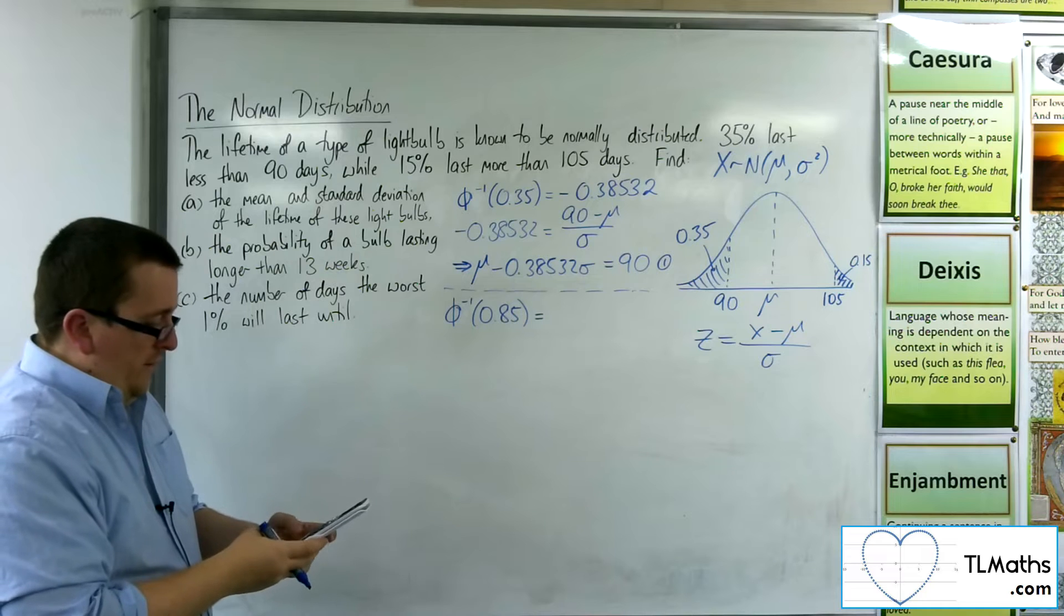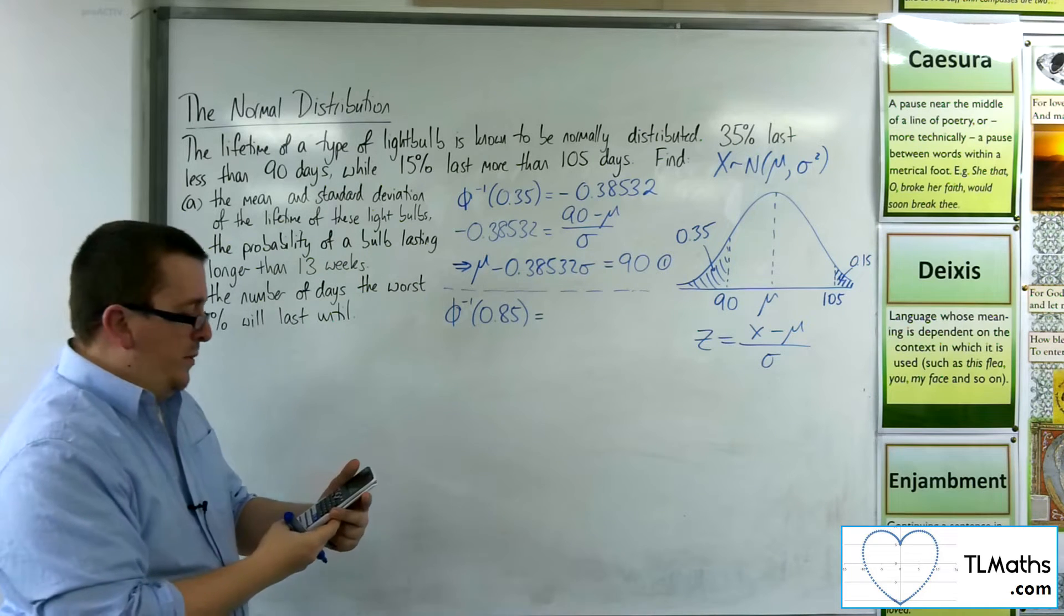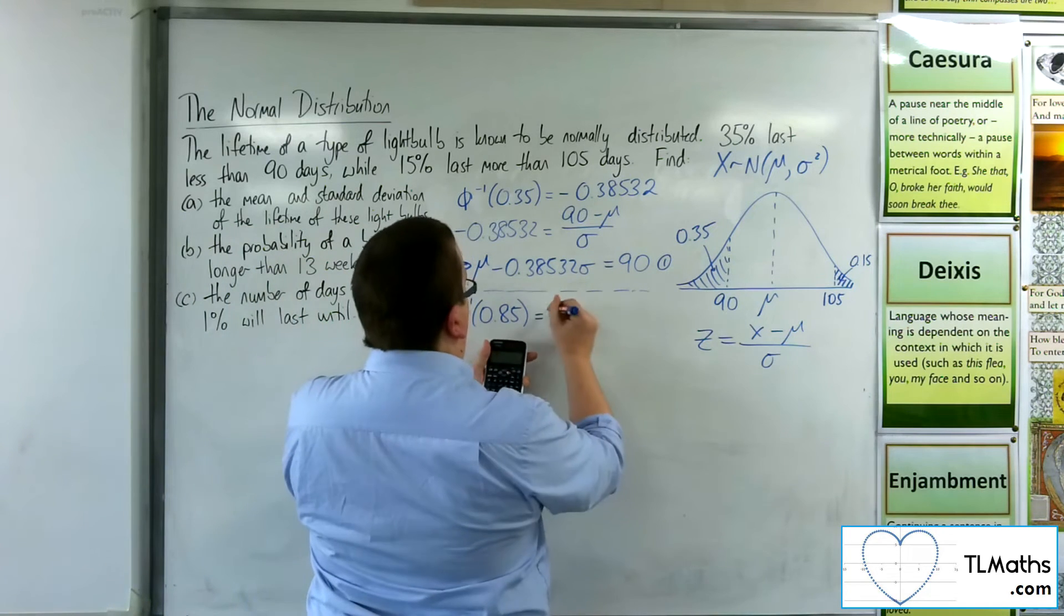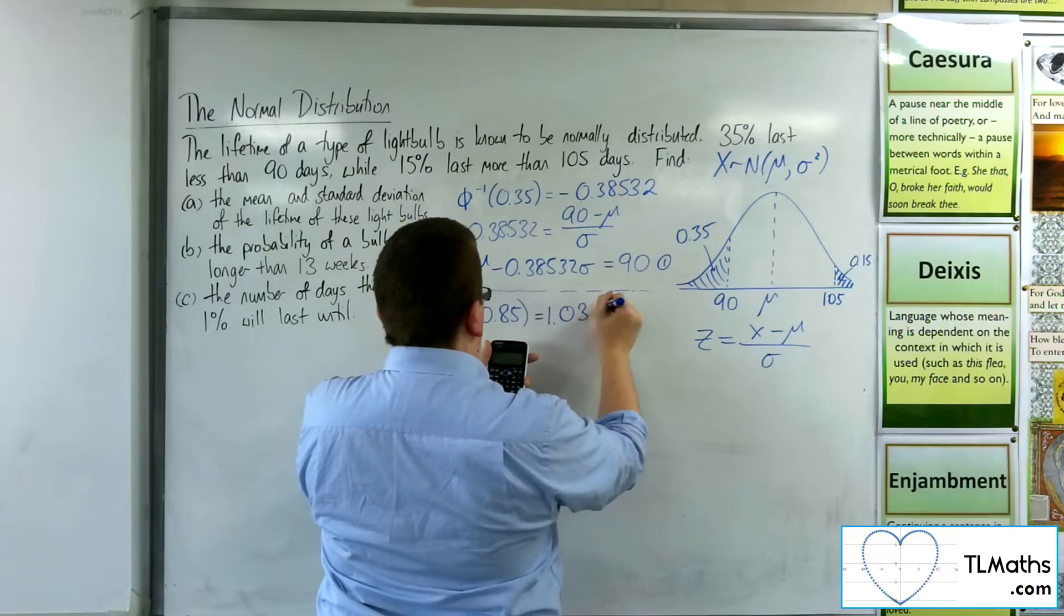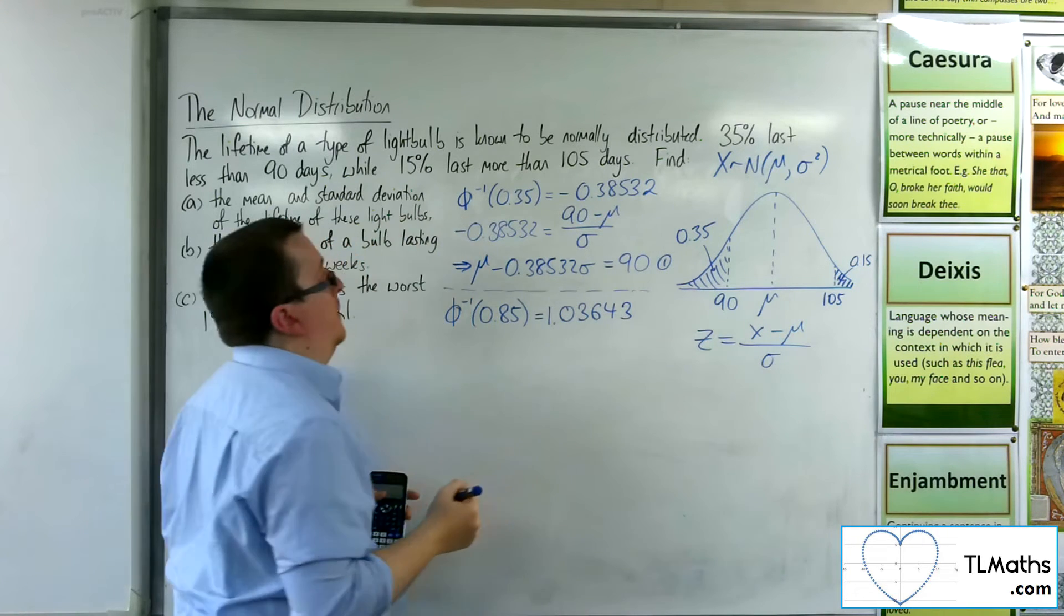So the area is 0.85. Sigma is 1 and mu is 0 again. So we get 1.03643 to 5 decimal places.